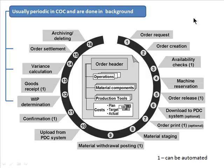After the availability check, you do a machine reservation — meaning reserve capacities — and then release the order. Once you've done all of that, you can release the order. An optional step would be to download to the PDC system, some kind of automated production computer-aided manufacturing system. You might also want to print the order optionally.